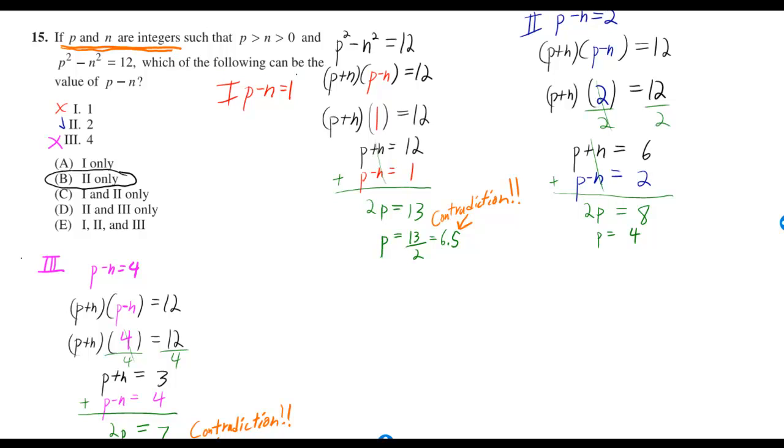And when we're going to ask which of the following can be the value of p minus n, we can just try making p minus n equal to 1 and seeing if we arrive at a contradiction, namely contradicting the fact that they told us p and n are integers.